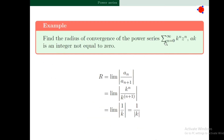Find the radius of convergence of sigma n=0 to infinity k^(n^n) · z^n, where k is a nonzero integer. Applying the formula R = lim |a_n / a_{n+1}|, we obtain R = 1 / |k|.